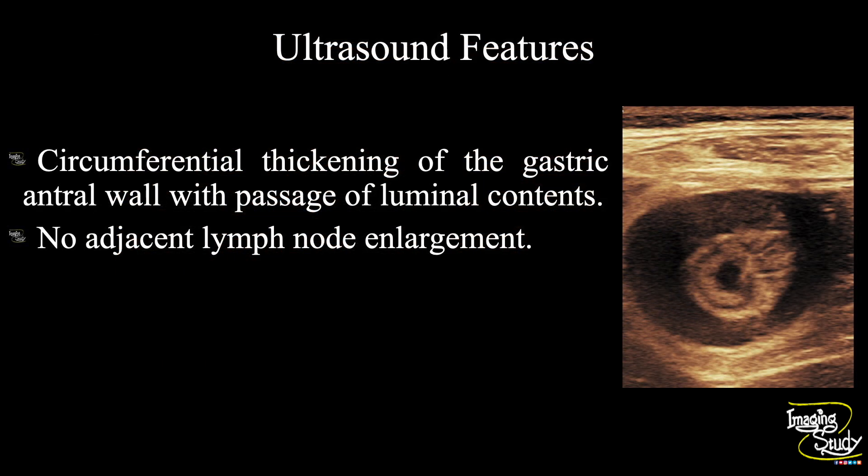In summary, circumferential thickening of the gastric antral wall is noted. There was no adjacent fat plane blurring or lymph node enlargement. So the diagnosis on ultrasound is gastric antral wall thickening.